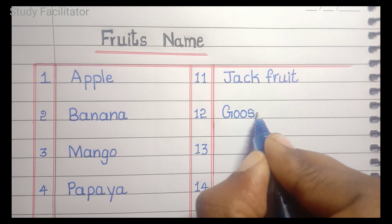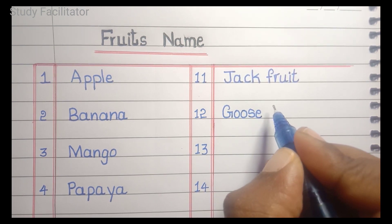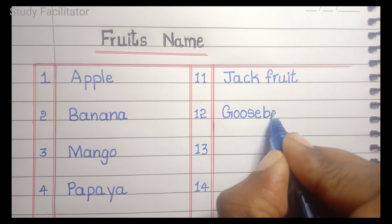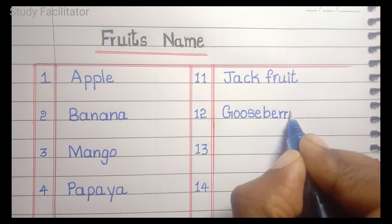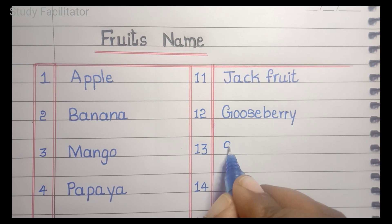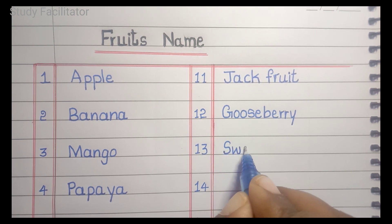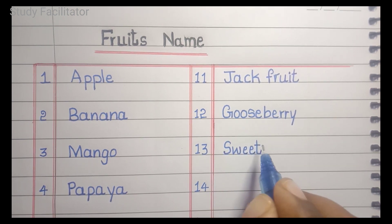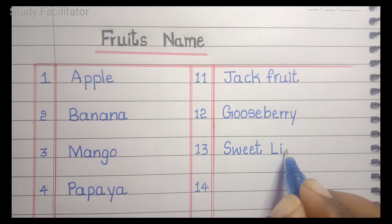Gooseberry. G, O, O, S, E, B, E, R, R, Y. Gooseberry. Sweet lime. S, W, E, E, T, L, I, M, E. Sweet lime.